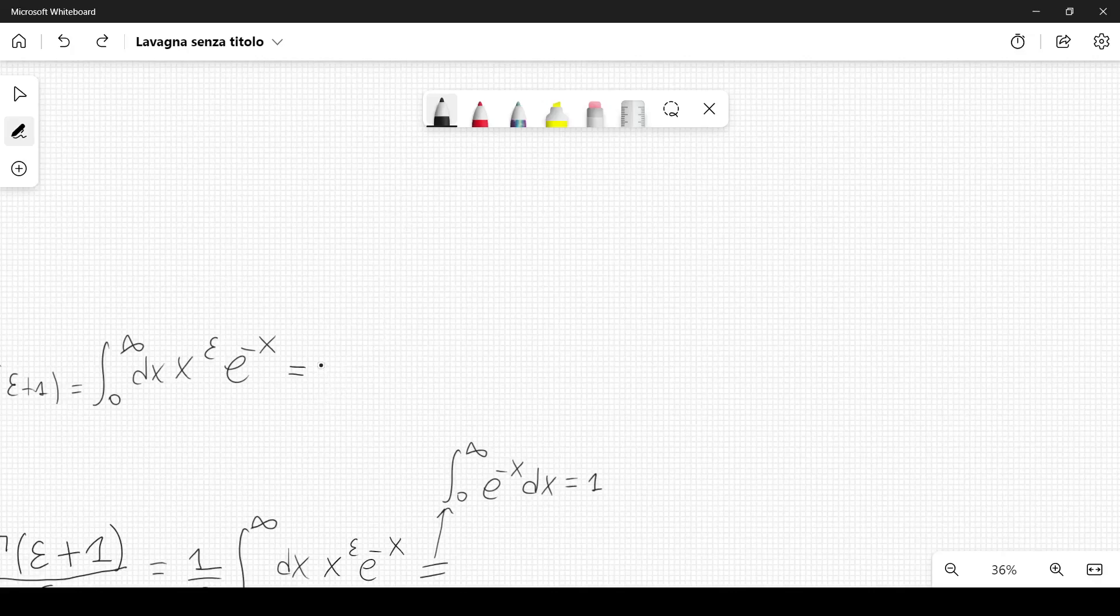I want to integrate by parts, so I rewrite the integral. First, I integrate e to the minus x. I write it as x to the epsilon times d of minus e to the minus x. This gives x to the epsilon times minus e to the minus x, evaluated between 0 and infinity.